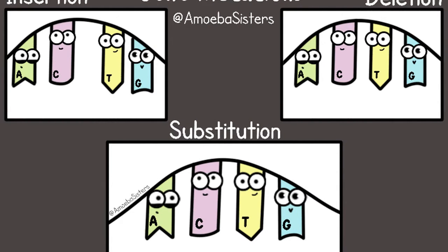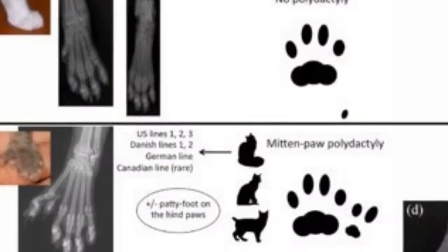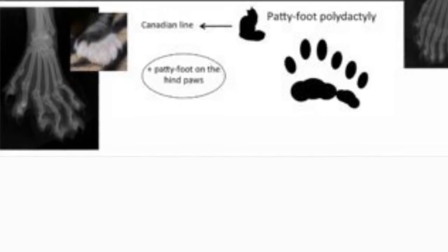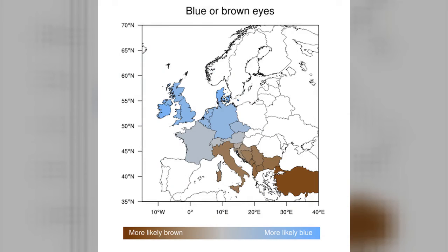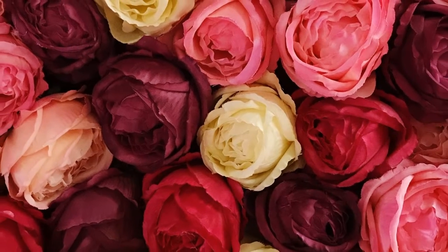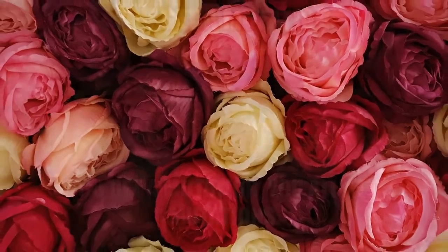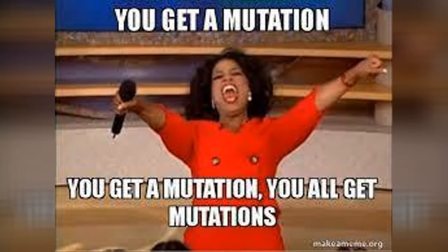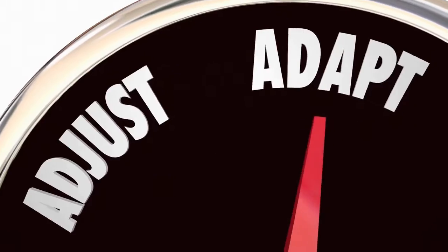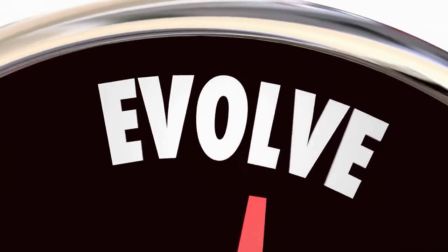Evolutionary mutations can happen to animals, plants, and germs because of insertion of information — such as adding an extra toe, like Hemingway's polydactyl cats — the deletion of information like color of eyes or lack of pigmentation, or substitution like the color of flowers. Differences in appearances such as thickness of fur, fruit skin, height, skin color, even sounds of voices and animal sounds, are mutations that help living things survive better in their environment.